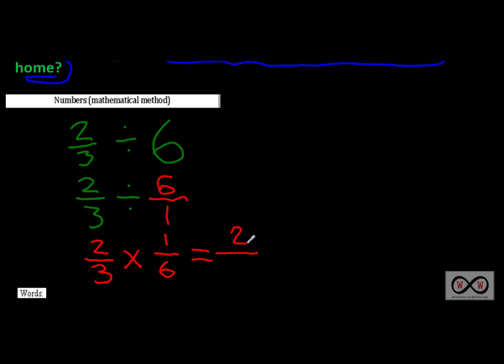We multiply the numerators: two times one equals two. The denominators: three times six equals eighteen. So we have two-eighteenths. Noticing that both are even numbers, we can make an equivalent fraction by dividing by two.